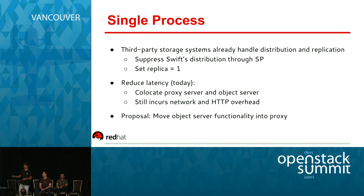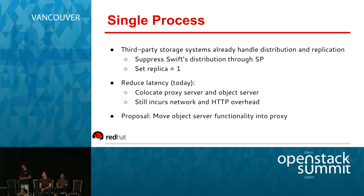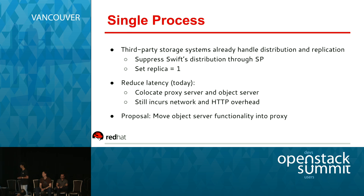So you have Swift capable of doing replication and distribution in the proxy server, and you also have the clustered file system doing the same thing. There's no easy knob to turn off Swift's distribution and replication. As of today, the way we suppress Swift's distribution is through storage policies, as Luis explained. Storage policies allow user requests to be routed to a particular object server that talks to a clustered file system backend.